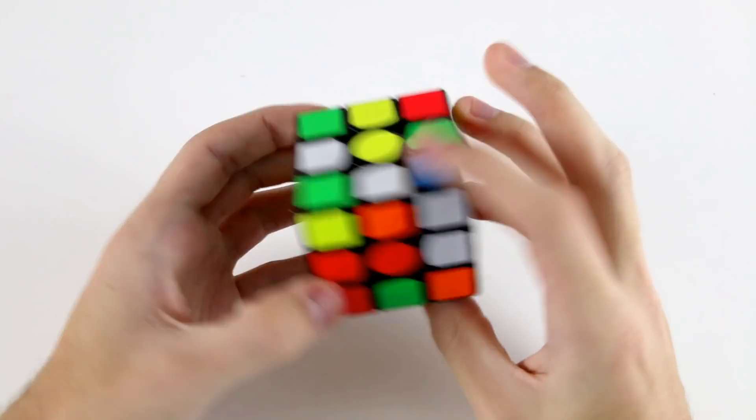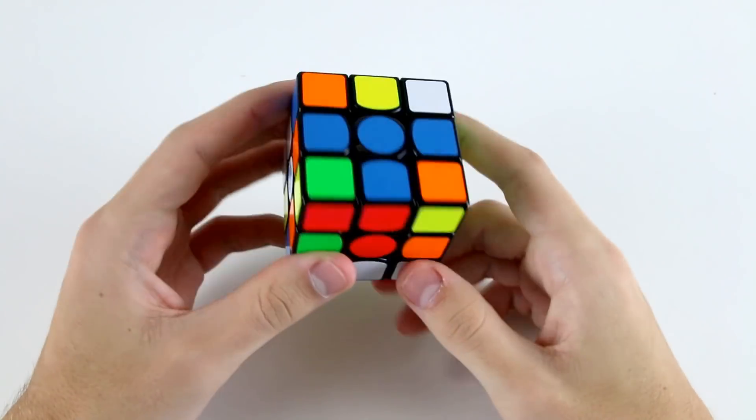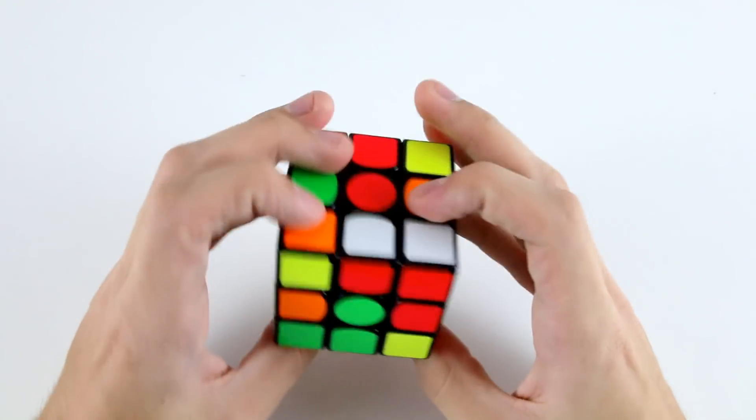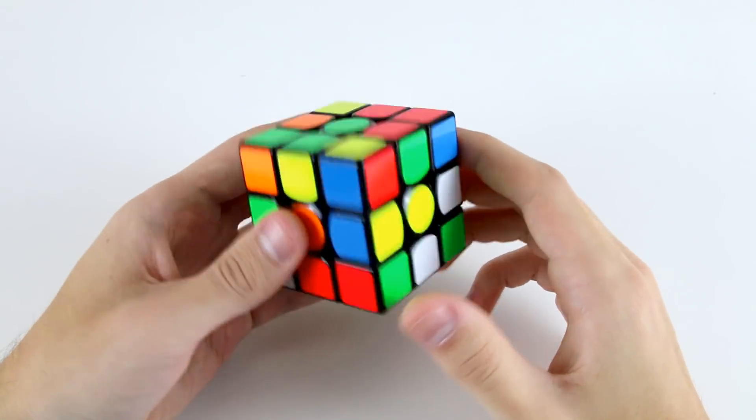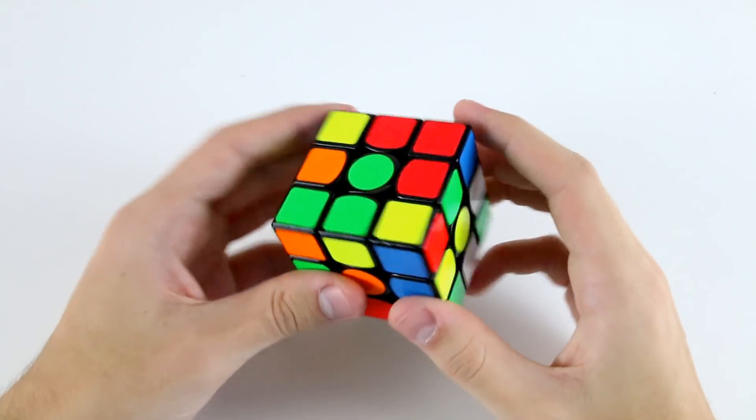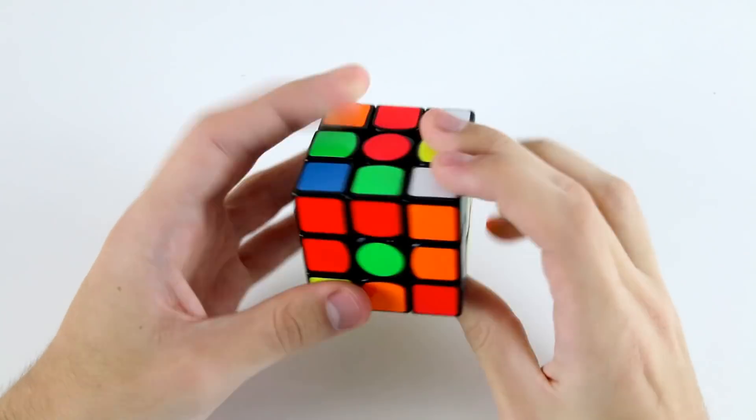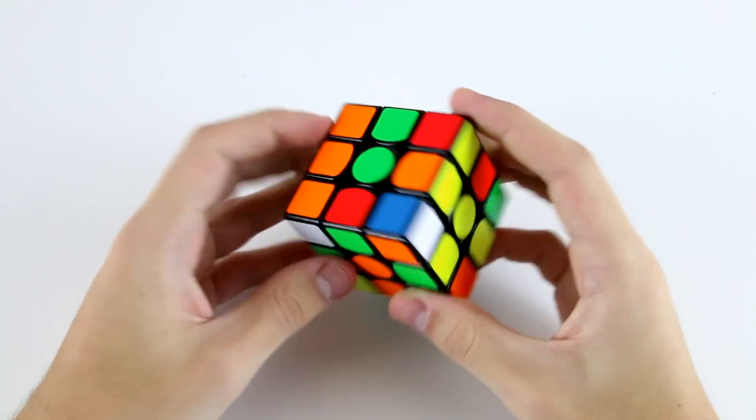There's a few different options to choose from in this scramble. I suppose one thing that, well I see the blue cross immediately but it's not very finger trick friendly, but we do have this blue f2l pair at the back here. What I can do is do something like u', r', d2, r', r', d', and then this pair will be ready for me to insert in the back left there.